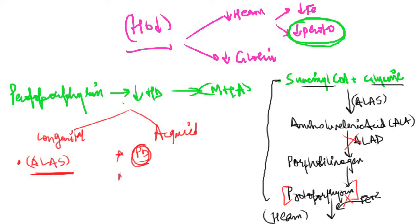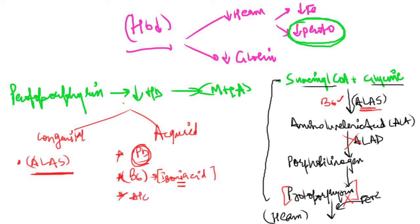Another cause is vitamin B6 deficiency. The enzyme ALAS requires vitamin B6 as a cofactor, so with B6 deficiency the pathway will not take place. Vitamin B6 deficiency is associated with isoniazid treatment — a drug used for tuberculosis — which causes vitamin B6 deficiency leading to sideroblastic anemia. The third acquired cause is alcoholism, because alcohol is a direct mitochondrial toxin, and this entire pathway takes place in the mitochondria, resulting in decreased protoporphyrin production.